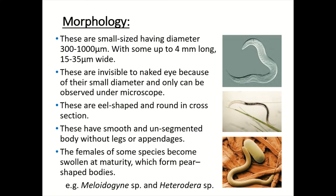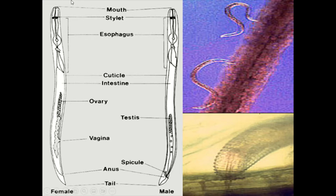Nematodes are eel-shaped and round in cross-section. They have smooth and unsegmented bodies without legs or appendages. The females of some species become swollen at maturity to form a pear-shaped body; these are known as sedentary nematodes. Examples of sedentary nematodes are Meloidogyne species and Heterodera species. This covers the morphology and anatomy of these nematodes.